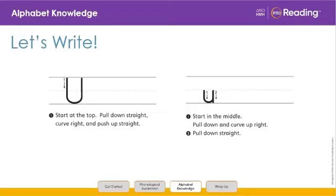Let's practice writing uppercase and lowercase U. Is your finger ready? Here we go. Uppercase U. We start at the top. Pull down straight. Curve right. And push up straight. Ready? Let's try again. Start at the top. Pull down straight. Curve right. And push up straight. Now you try on your own.